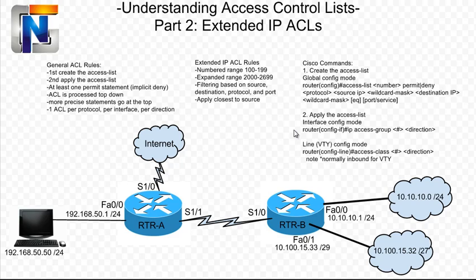When we move on to applying the access list, it's going to be exactly the same as standard access lists. Anytime you're applying an access list, whether it's standard or extended, it's always the same command. We would go into the interface configuration mode and type IP access-group, the number, and the direction, which is in or out. To apply that to a VTY line, we would type access-class, followed by the access list number, and then also the direction. For VTY lines, normally you will be typing in, as we would like to apply most access lists inbound when the traffic is coming into the VTY lines.